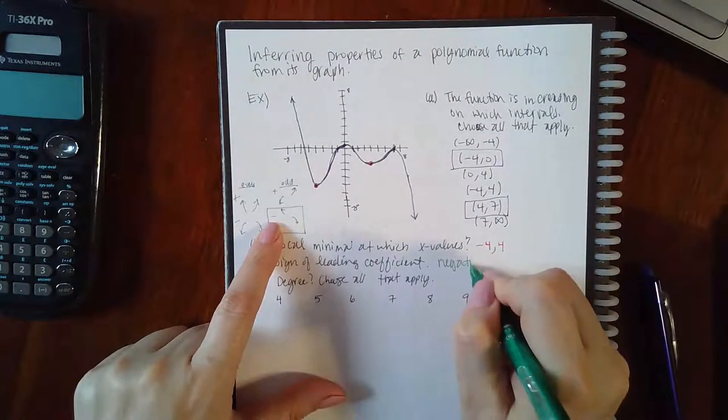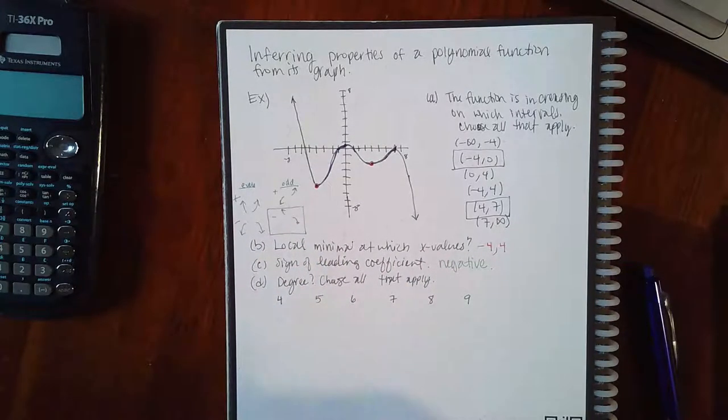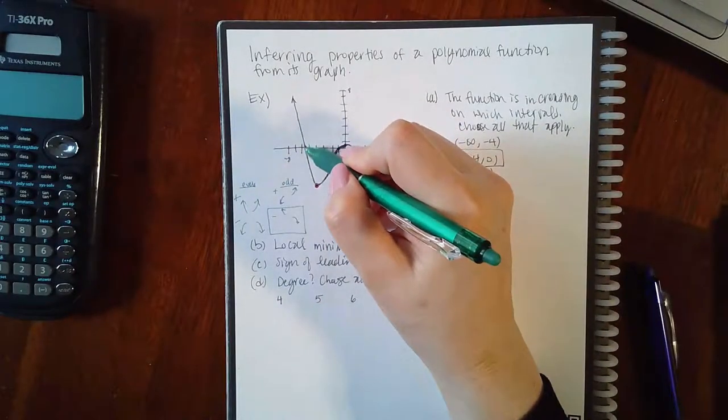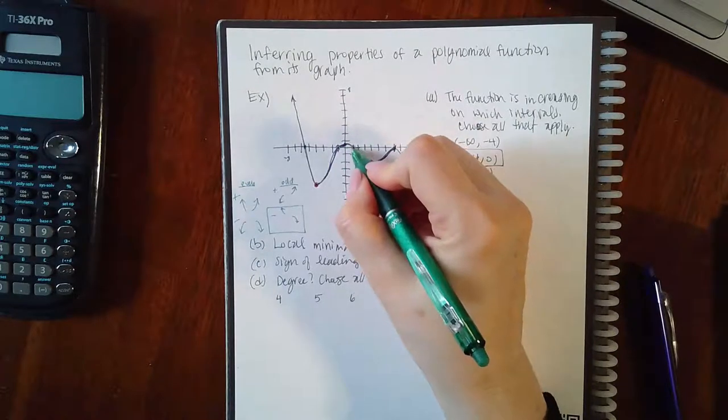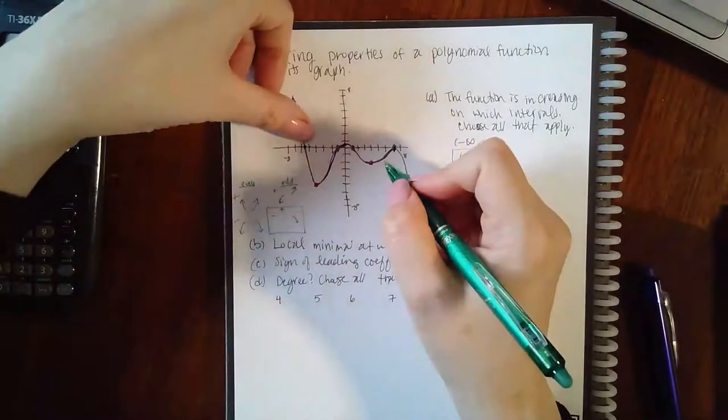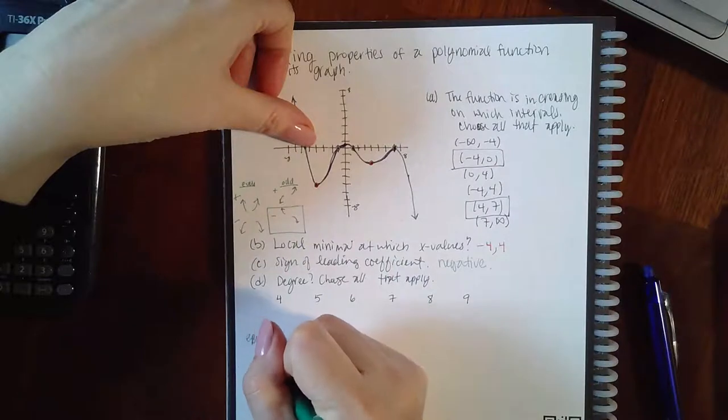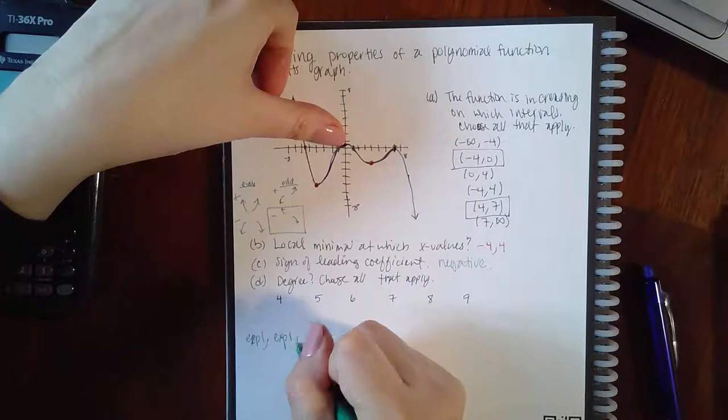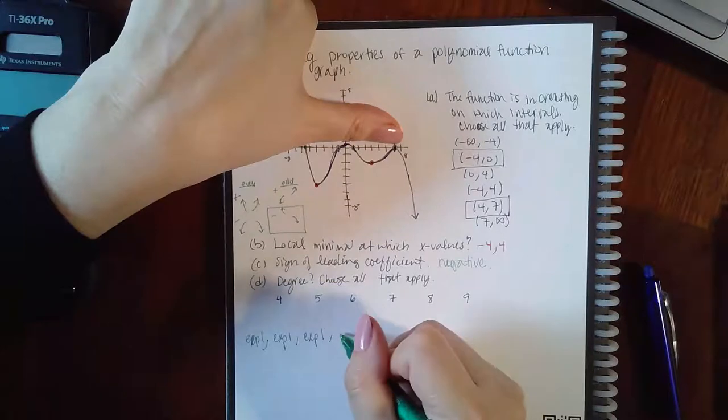And then as far as degree, we're going to choose the degree that applies. Notice you have one x-intercept right here, another x-intercept right here, another one here, and another one there. So at this one you're crossing, which means that exponent would have an exponent of one. Then you're crossing here, which means that would have an exponent of one. Crossing there, that would have an exponent of one. And then you're touching here, so that one would have an exponent of two.